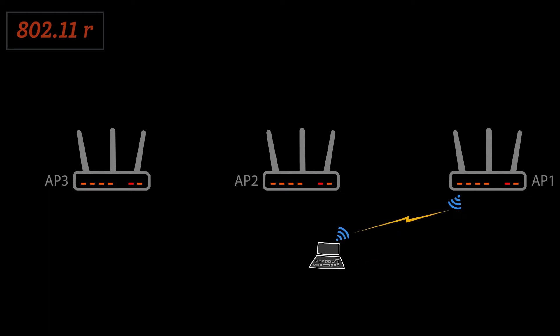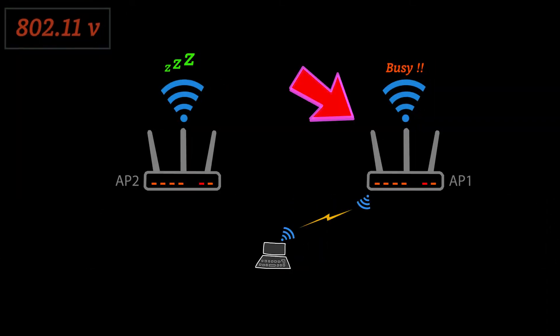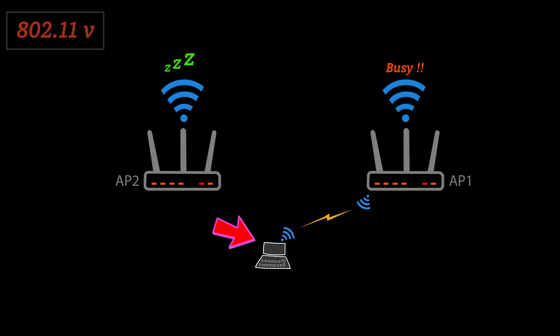Another standard has the access point let the connected client know if there is a less busy access point available, so the client can roam to that one. This can not only improve roaming but also load balancing. However, these features would only work if both the access points and the clients support them — otherwise they wouldn't have any positive effects on roaming.